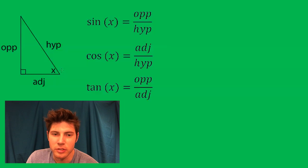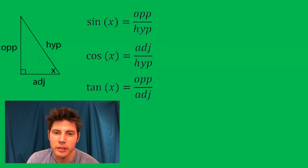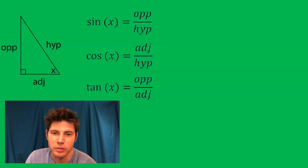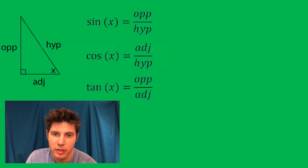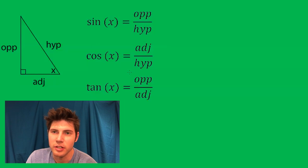The hypotenuse is also adjacent, but we don't call it adjacent because it's the one opposite the right angle. The sine of your angle is equal to the ratio of the length of the opposite side over the hypotenuse. Cosine is adjacent over hypotenuse, and tangent is opposite over adjacent.